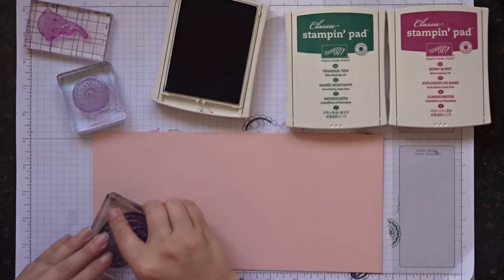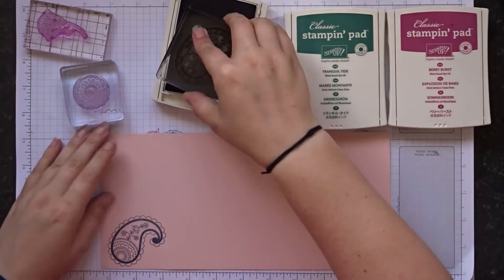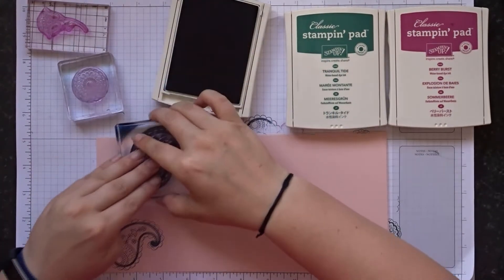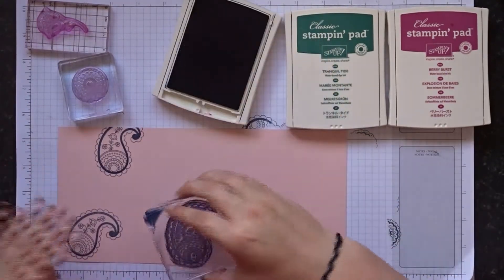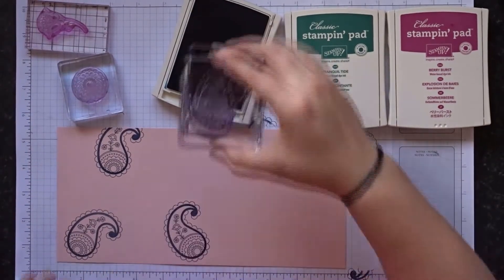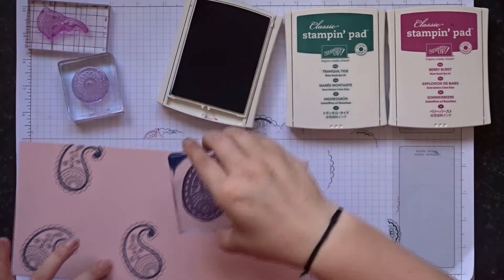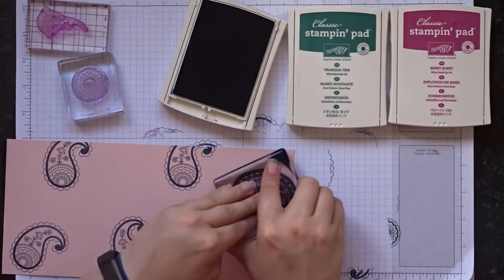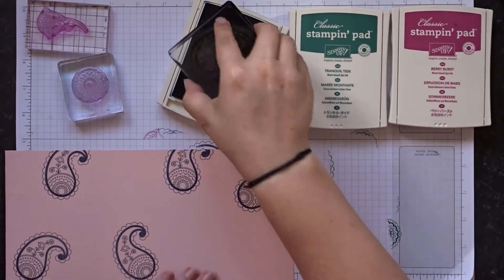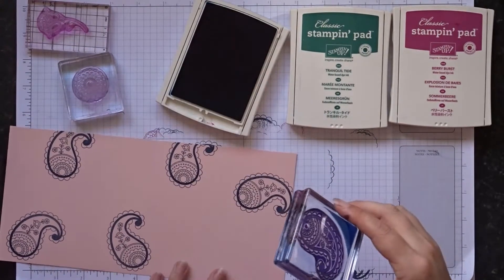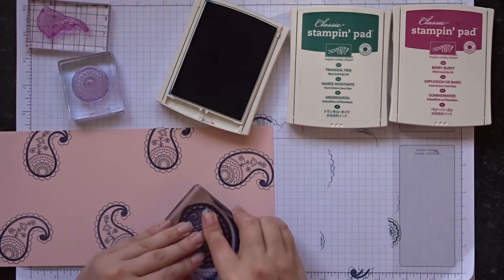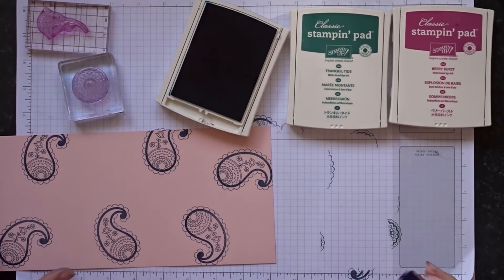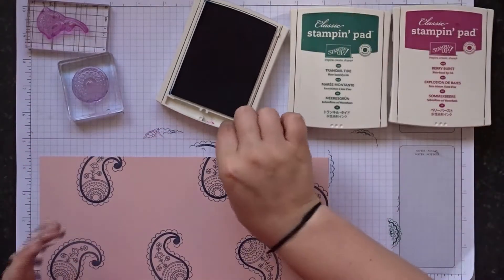So I'm going to start off with my largest stamp which is this one here and I'm going to use Night of Navy. So ink that up and stamp that as you wish all over the cardstock. I think that will be fine for now.